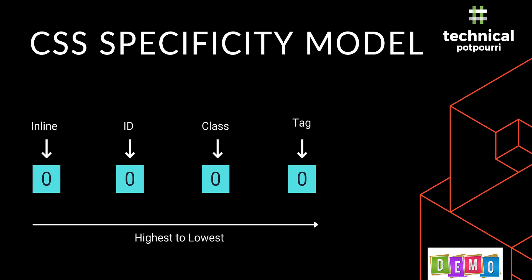Let's talk about the CSS specificity model. CSS specificity is a collection of rules that the browser will use to determine which developer-defined style will be applied to a particular element. CSS specificity follows an arithmetic model — basically four zeros. The specificity starts from the left side and goes to the right, with the left being the highest and the right being the lowest. Each zero represents different styling: the leftmost is inline, followed by ID, then class, and then the tag.